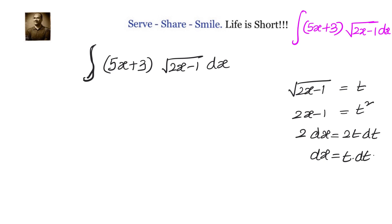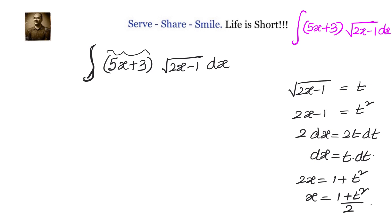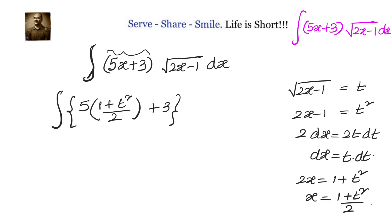Now, if 2x minus 1 equals t squared, then what is 5x + 3? For that, we write 2x equals 1 + t squared, which means x equals (1 + t²)/2. Once we know x, we substitute to get 5x + 3 equals 5 times (1 + t²)/2 plus 3.